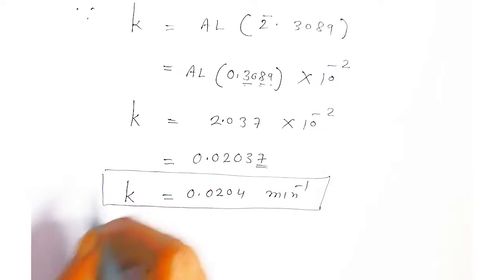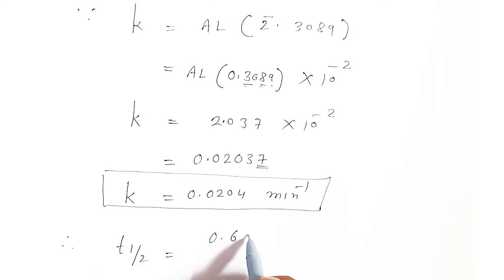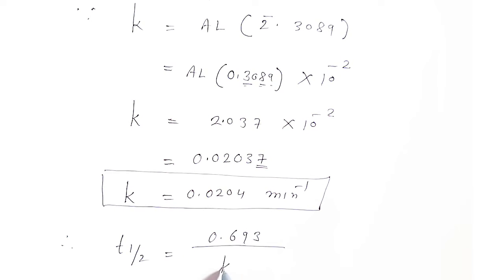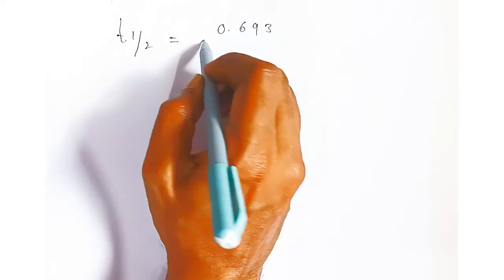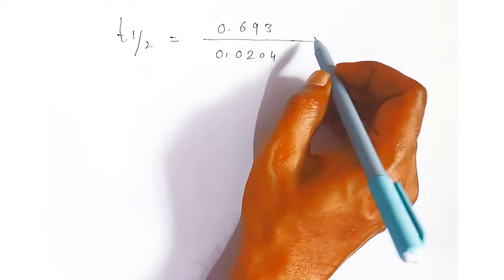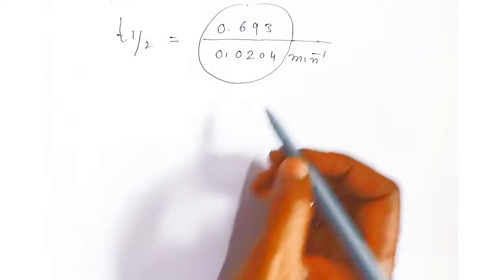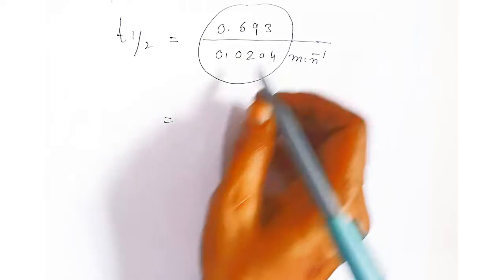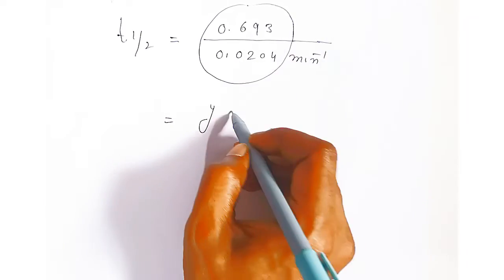Now that we have the rate constant K = 0.0204 min⁻¹, put this value into the T half equation: T half = 0.693 divided by 0.0204 min⁻¹. The minute inverse in the denominator comes to the numerator, so the unit becomes minutes. Let Y = 0.693 / 0.0204.